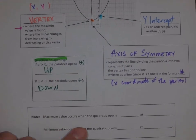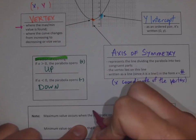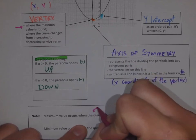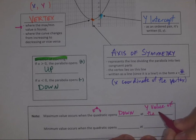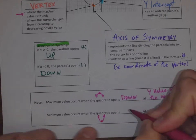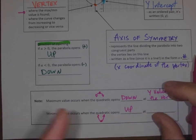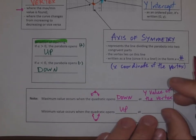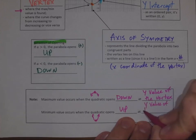The maximum value occurs when the quadratic opens down — there's an actual top — and it is the y-value of the vertex. The minimum value occurs when the quadratic opens up — there's an actual bottom — and again it is the y-value of the vertex.